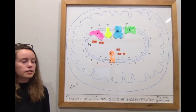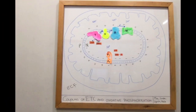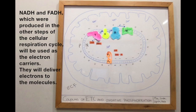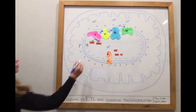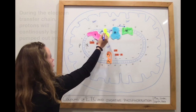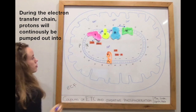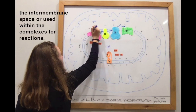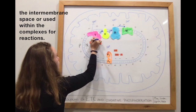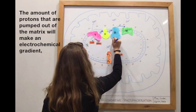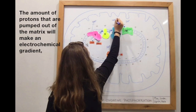This orange one is also called the ATP synthase. We will now start by talking about the last part of the Krebs cycle. NADH and FADH2, which were produced in the other steps of the cellular respiration cycle, would be used as the electron carriers. They will deliver electrons to the molecules during the electron transfer chain, and protons will continuously be pumped out into the intermembrane space or used within the complexes for reactions.